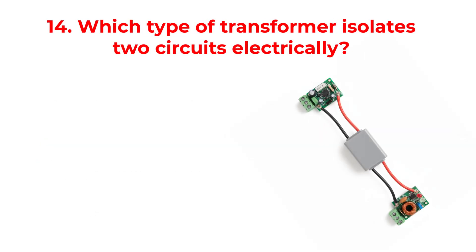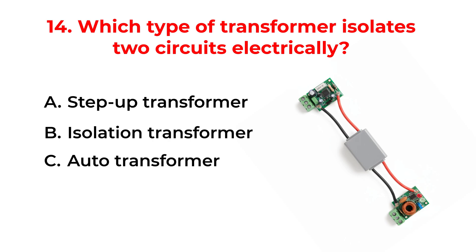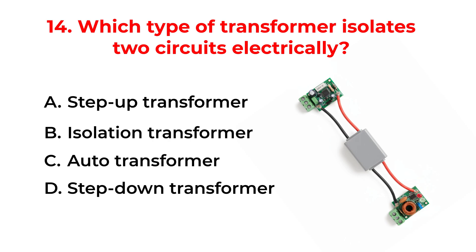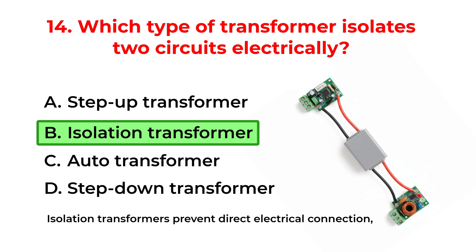Which type of transformer isolates two circuits electrically? A. Step-up transformer. B. Isolation transformer. C. Auto transformer. D. Step-down transformer. The correct answer is Option B: Isolation transformer. Isolation transformers prevent direct electrical connection, providing safety and noise reduction.